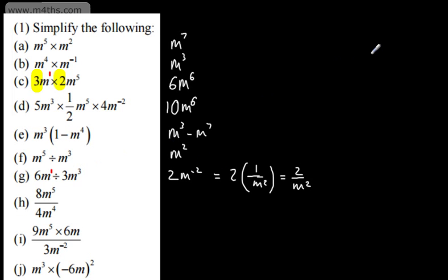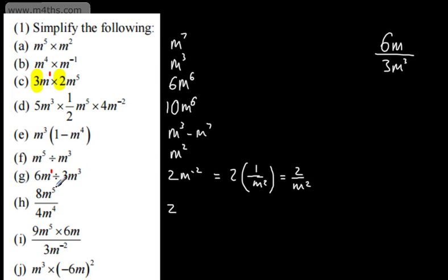You might have seen this written as 6m divided by 3m cubed — exactly the same, just different notation with a division sign or division bar. Here with the division bar, 8 over 4 gives 2, then m to the 5th divided by m to the 4th — subtracting powers gives m to the power of 1, which we simply write as 2m.